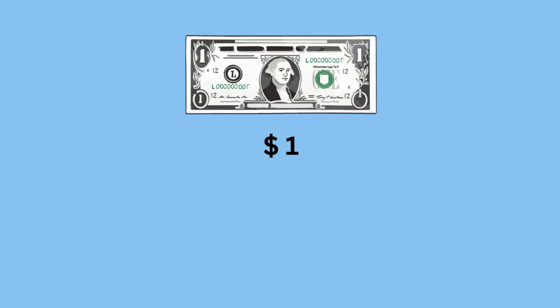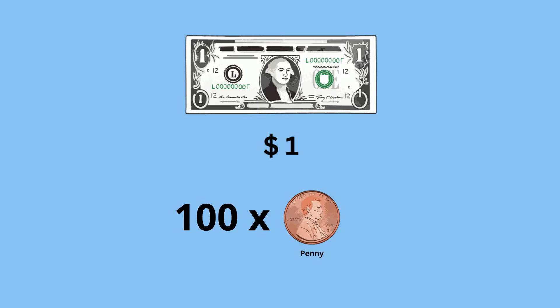A dollar bill is the smallest unit of paper currency. It's made up of 100 pennies, or 100 cents.